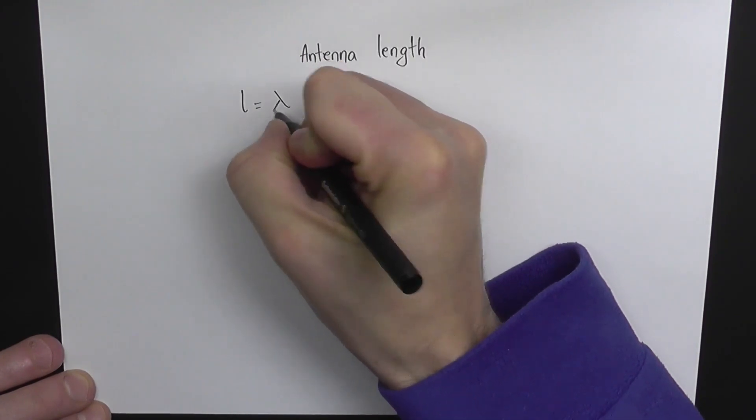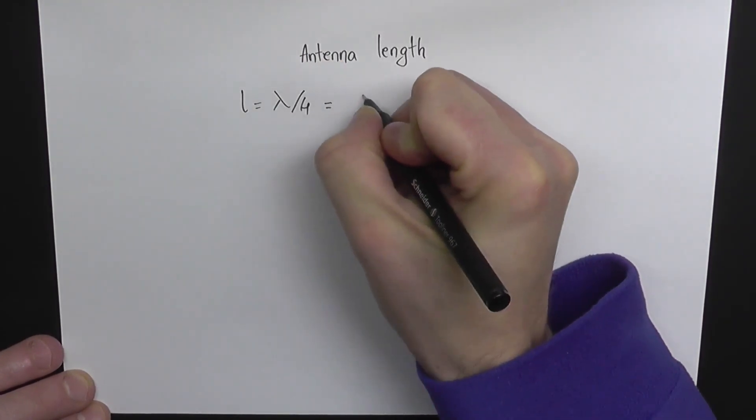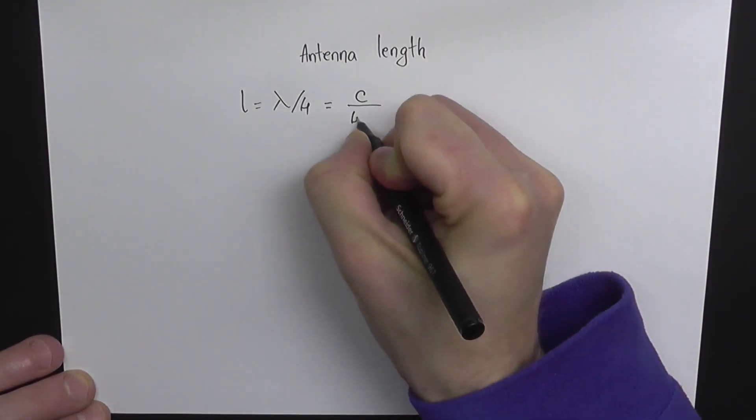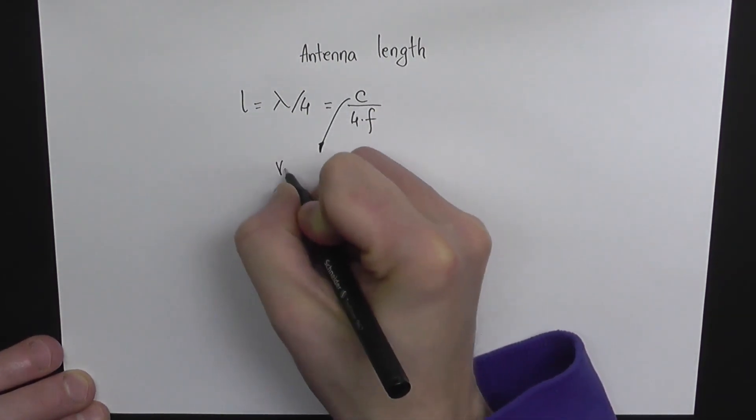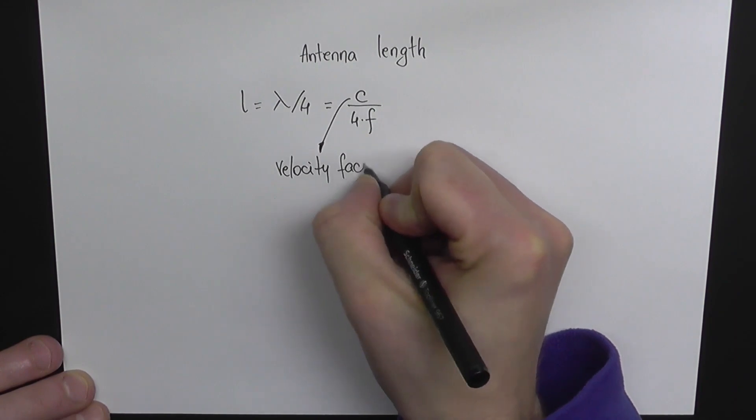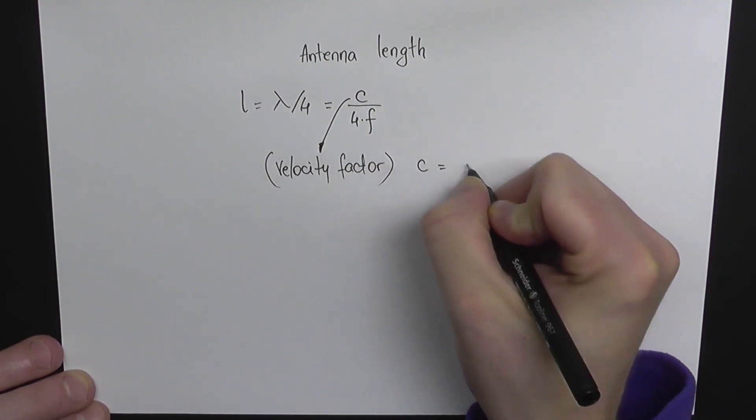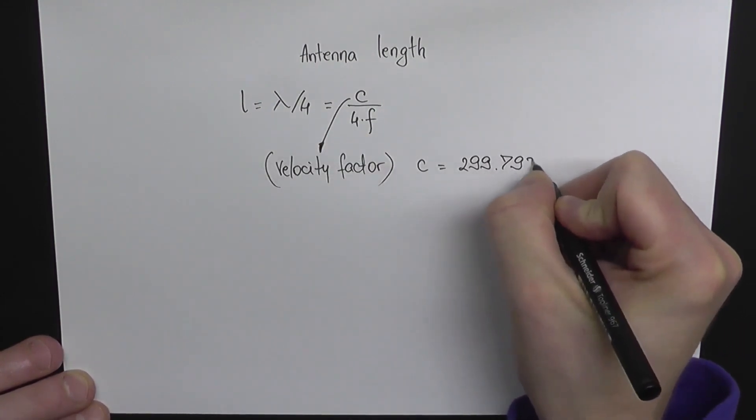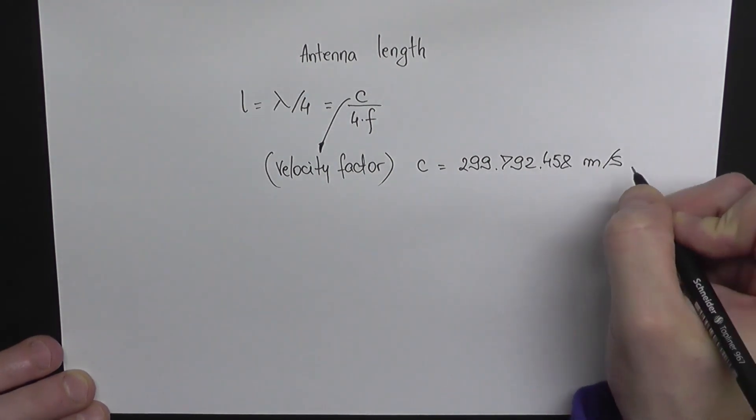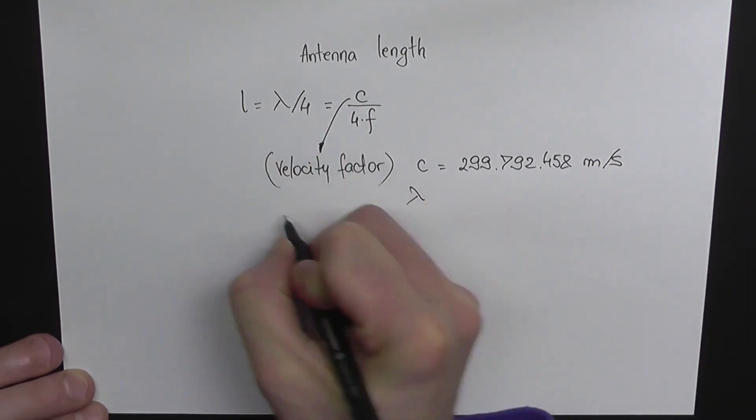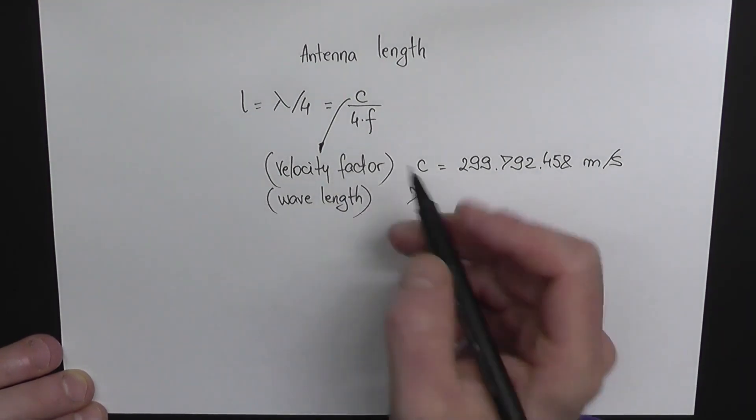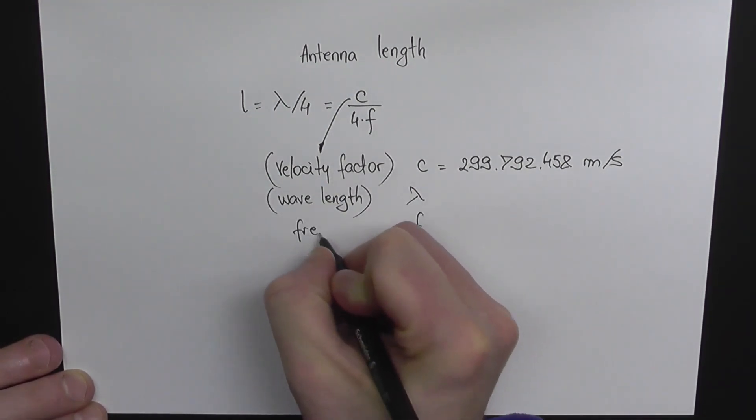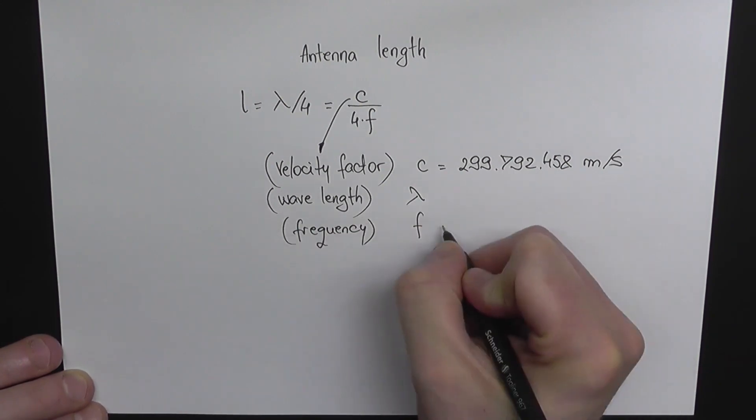This C here is called the velocity factor and it's basically the speed of light, 299,792,458 meters per second. This lambda here is the wavelength and our frequency we're going to take 100 MHz to simplify this operation here.